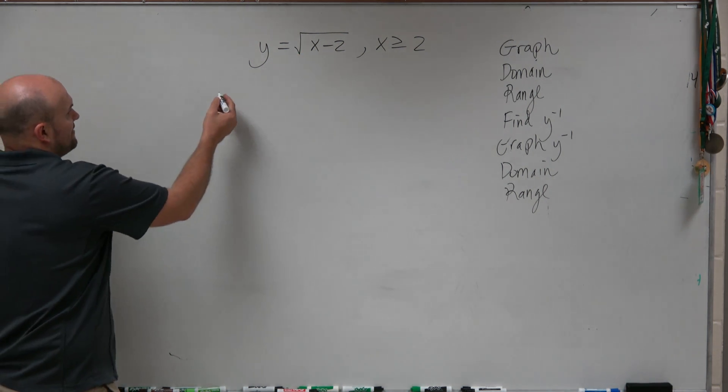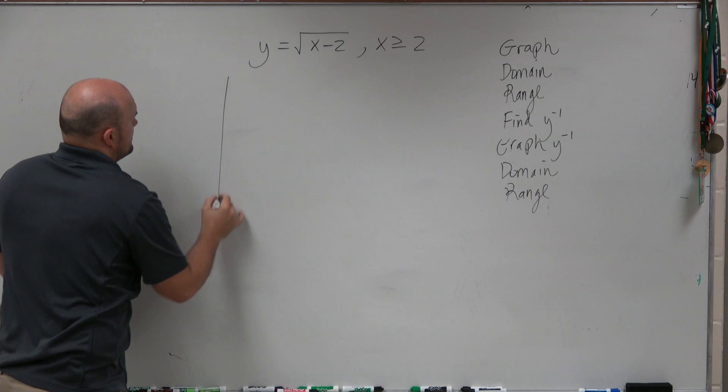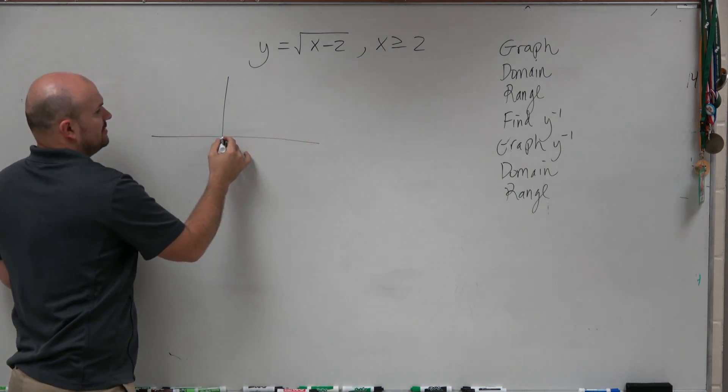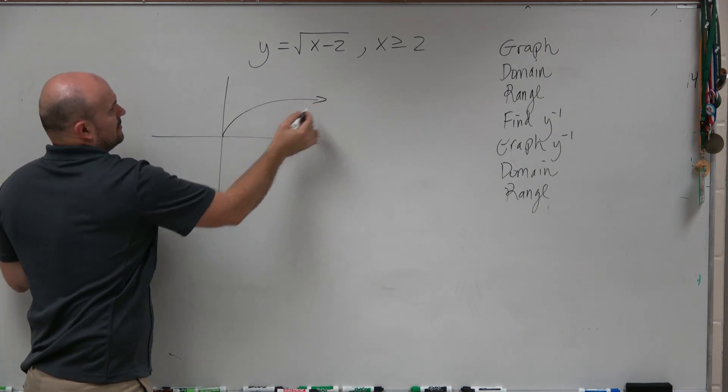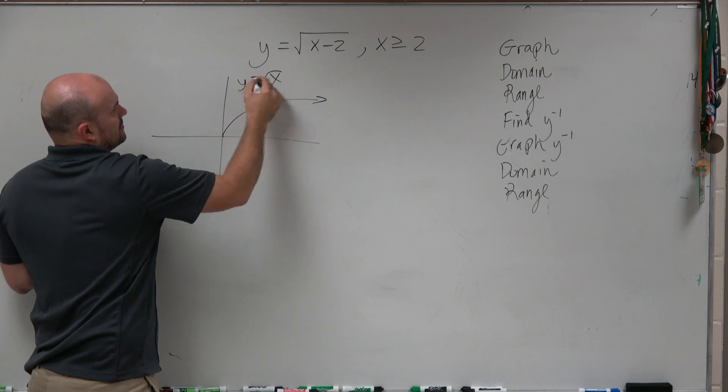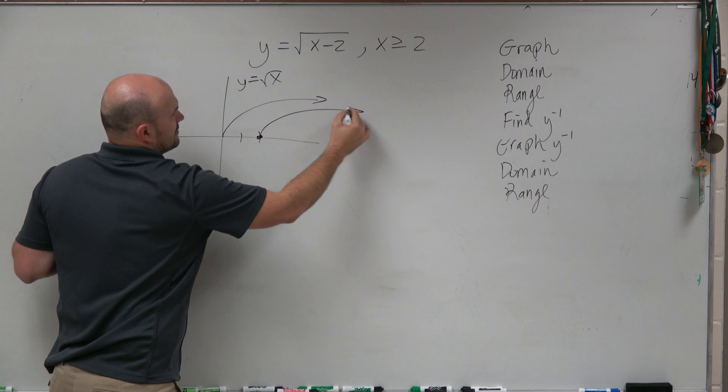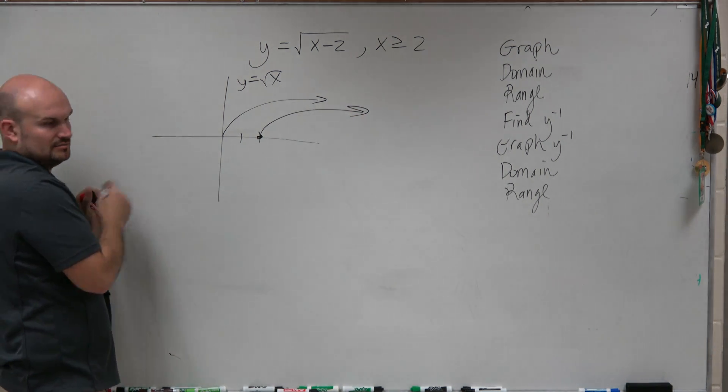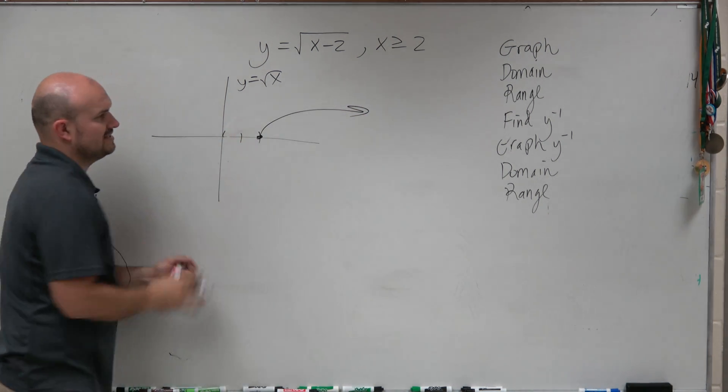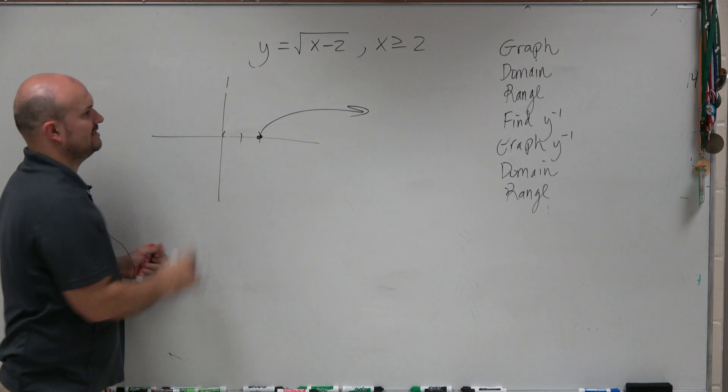Remember what the graph of a radical looks like? Basically, looks like this. That is the square root of x. So if we're just shifting this over two units, just draw the same graph and shift it over two units. Does everybody see how easy it was for me to graph that?